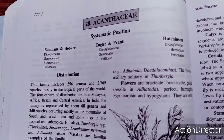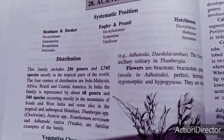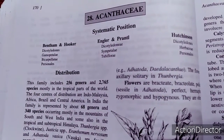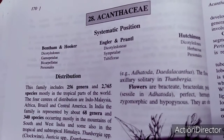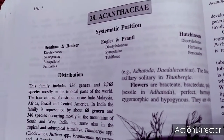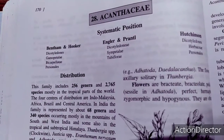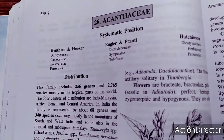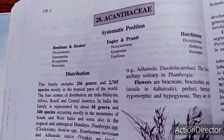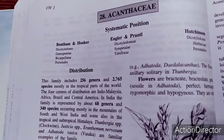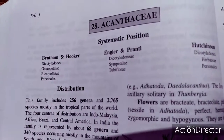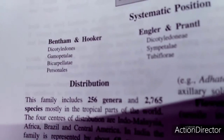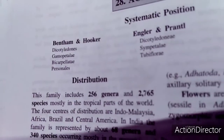Good evening everyone. Today we will discuss the Acanthaceae family, popularly known as the acanthus family. This family is recognized with 256 genera and 2765 species. Hygrophylla and Acanthus are examples belonging to this family. It is also commonly known as the Barleria family. According to Bentham and Hooker, the classification is Dicotyledons, Gamopetalae, Bicarpellatae, and Personales.